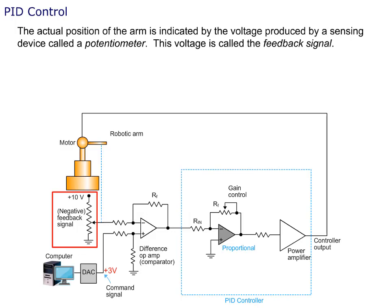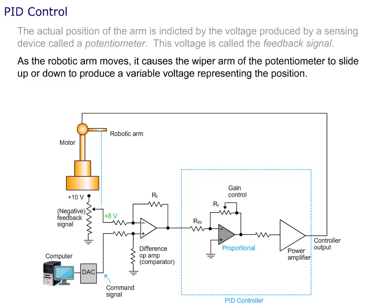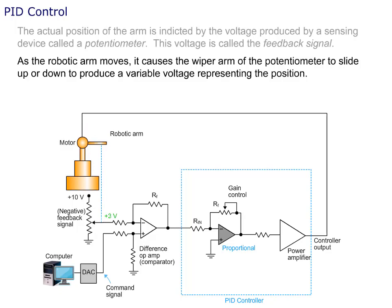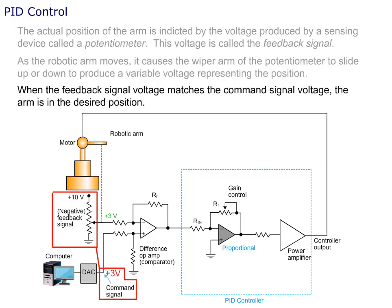The actual position of the arm is indicated by the voltage produced by a sensing device called a potentiometer. This voltage is called the feedback signal. As the robotic arm moves, it causes the wiper arm of the potentiometer to slide up or down to produce a variable voltage representing the position. When the feedback signal voltage matches the command signal voltage, the arm is in the desired position.